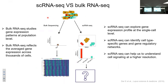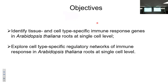Compared to bulk RNA-seq, which studies gene expression at the population level and reflects average gene expression across thousands of cells, single-cell RNA-seq can explore gene expression profiles at the single-cell level and identify cell types, cell type-specific genes, and regulatory networks. We hypothesize that single-cell RNA-seq can help us understand cell signaling at high resolution. Our objectives are to identify tissue and cell type-specific immune response genes in Arabidopsis roots at the single-cell level, and explore cell type-specific regulatory networks of immune response.